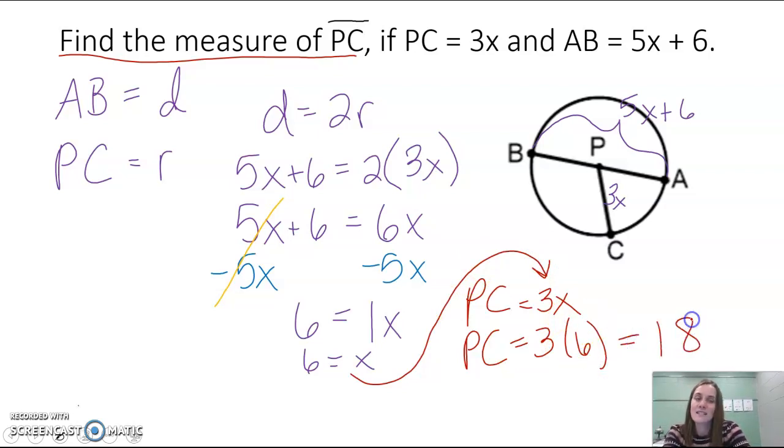and that is 18. 3 times 6 is giving us 18. So 18 would be the length of segment PC. 18 would be our radius, which if you think about it, means that our diameter is 36. Our diameter would be double that.